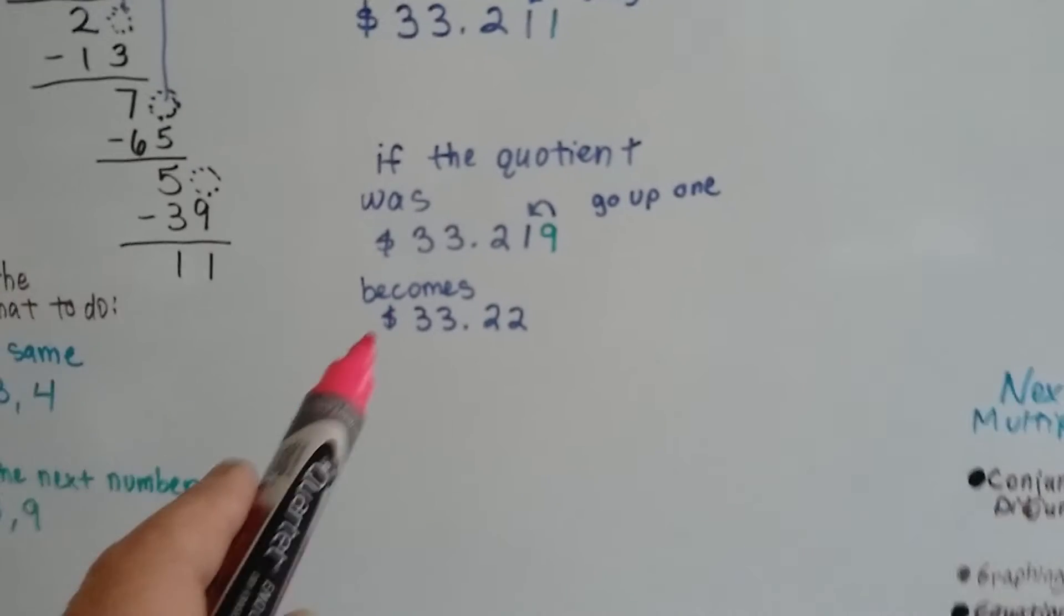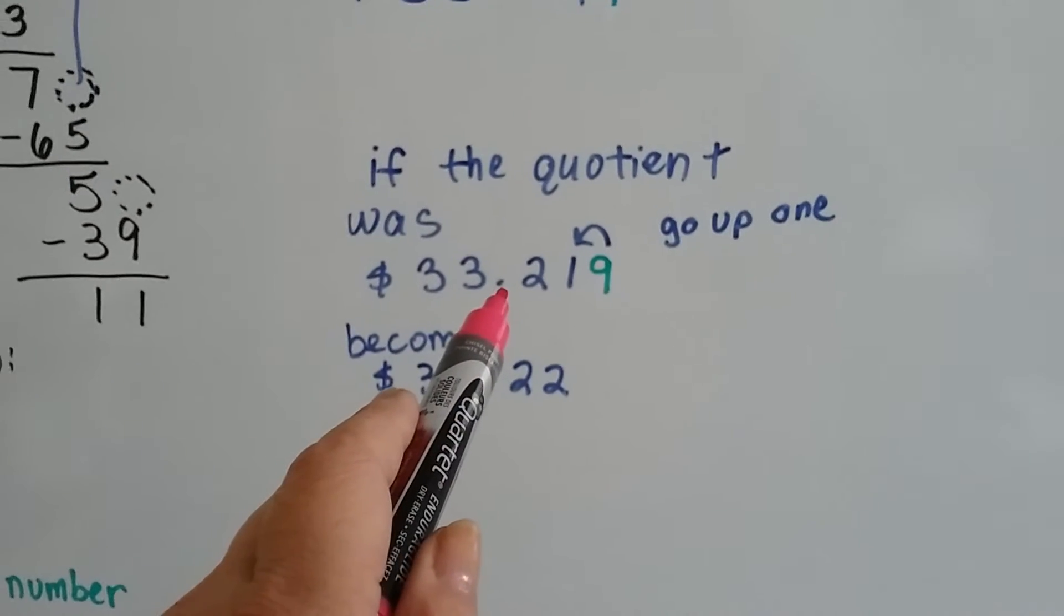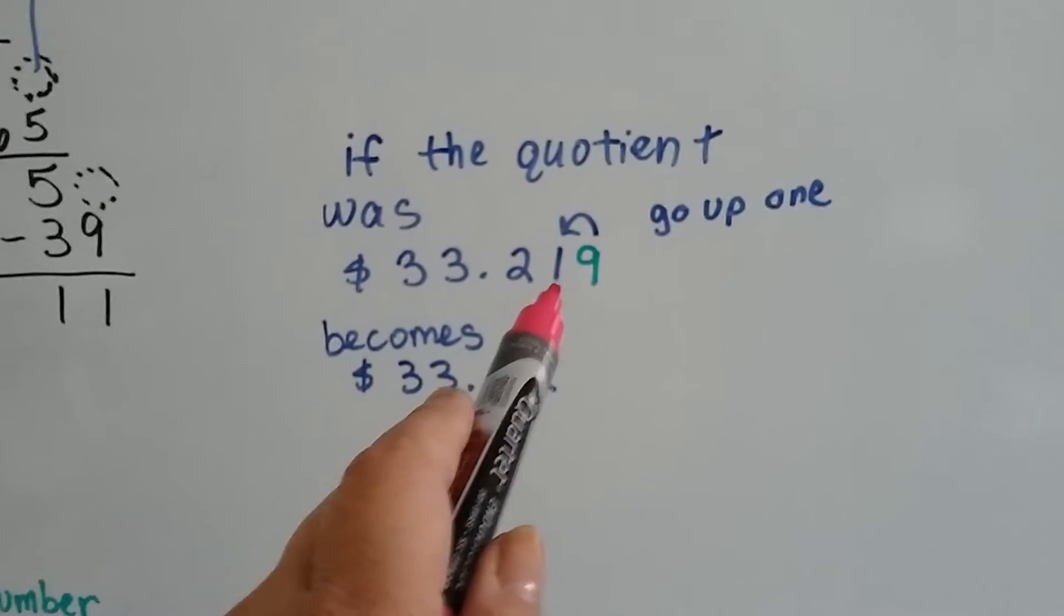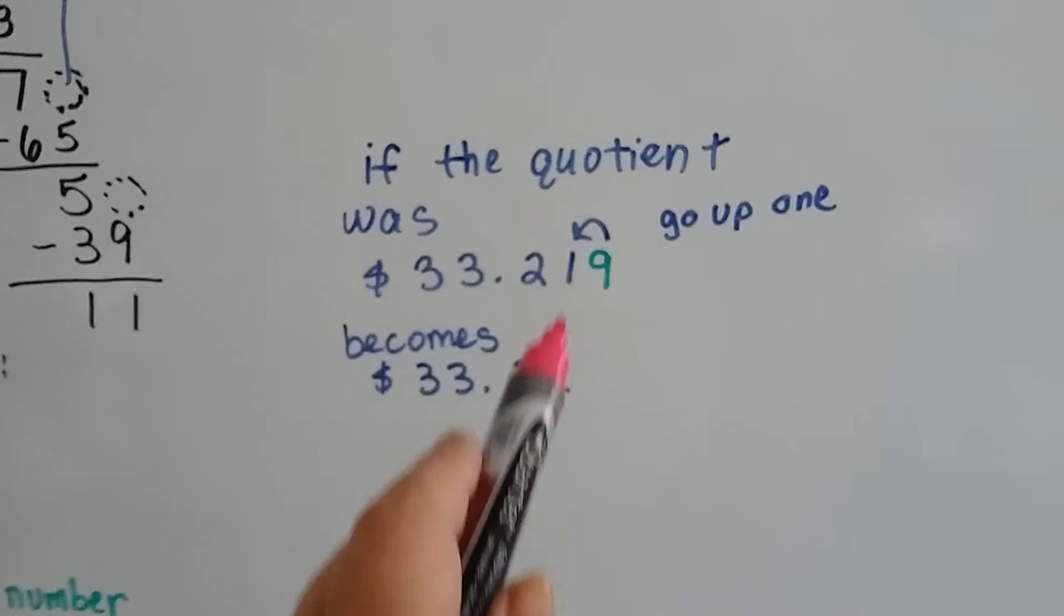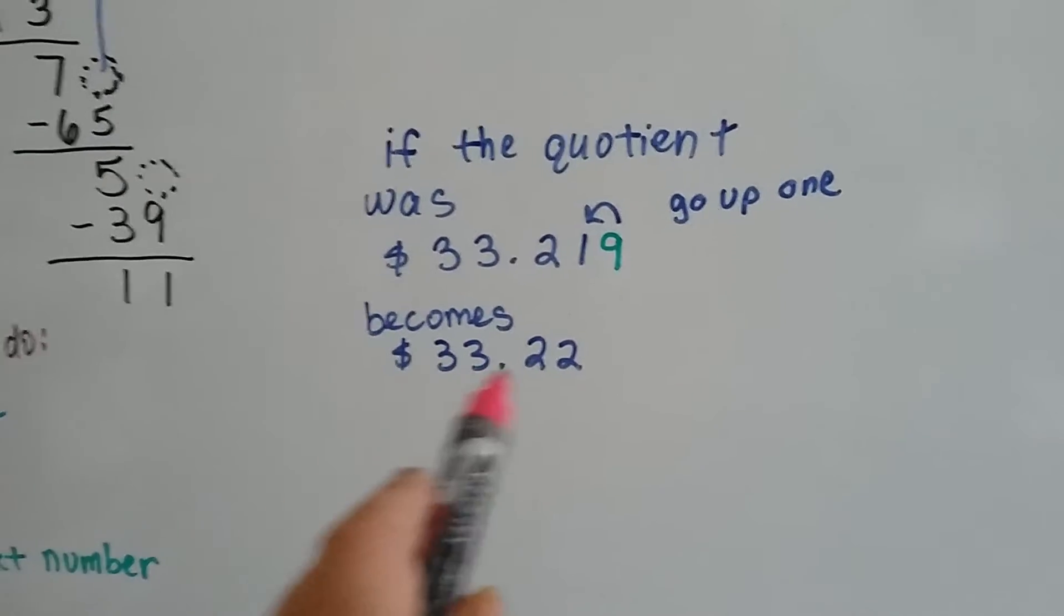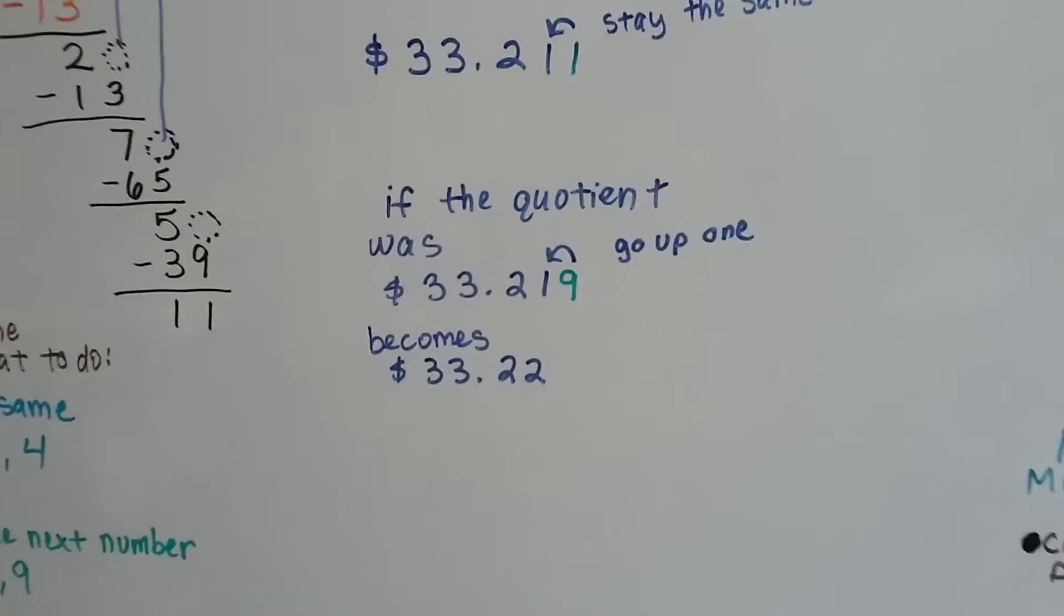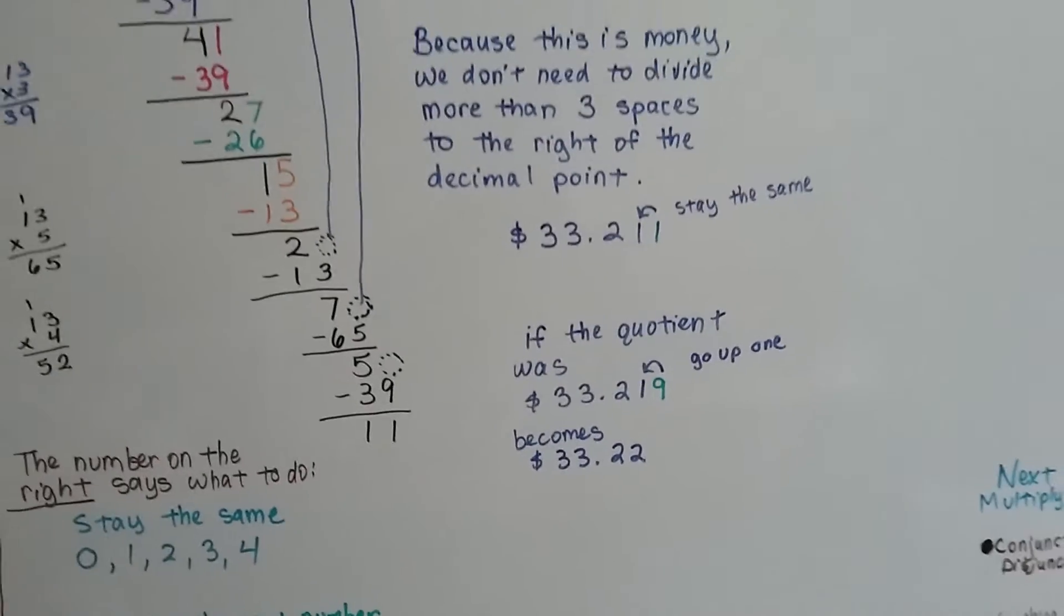So what if the quotient was $33 and then it had, for the cents, it had 2, 1, 9. Well, this 9 would tell that 1 to go up to a 2, and it would become $33.22 as what it would round off to.